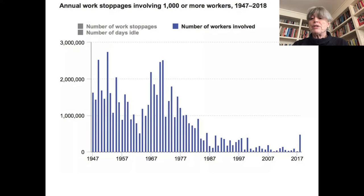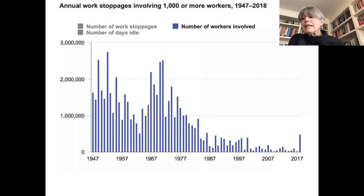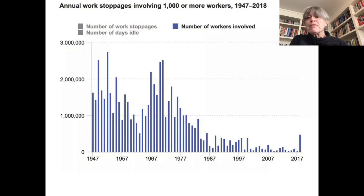Economists like to talk about unions as something that can 'take wages out of competition,' meaning that in a given industry, while firms might compete with one another, they don't do so on the basis of squeezing labor, but rather on the basis of quality or productivity or something like that. Wages are now part of the competition in a way that they were not in the mid-20th century.